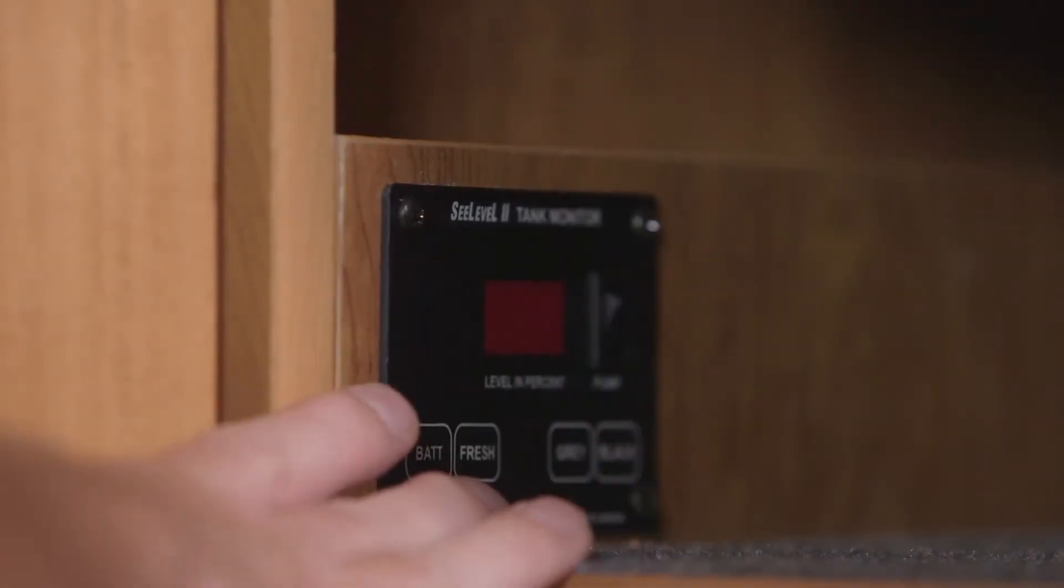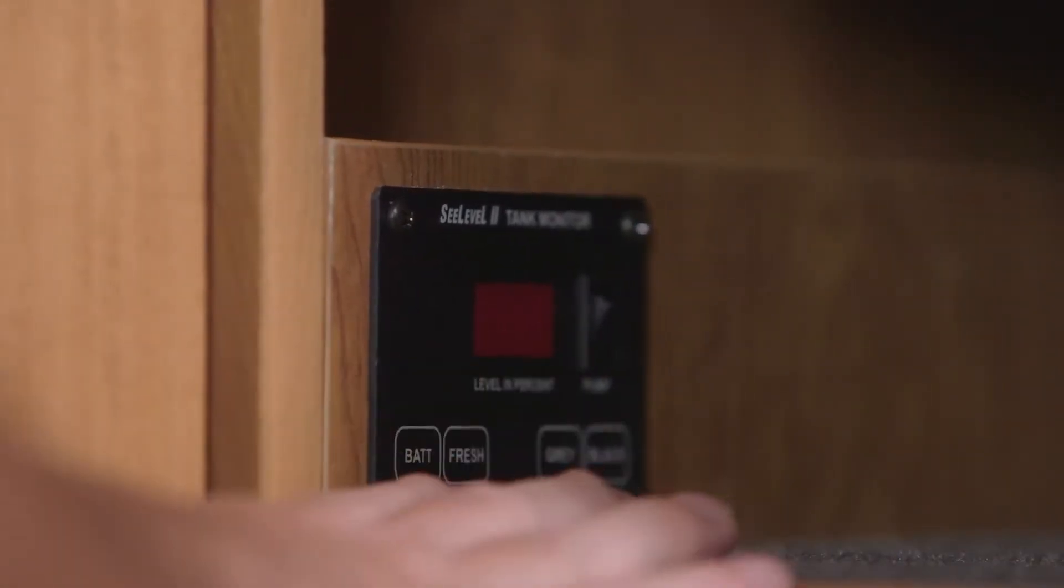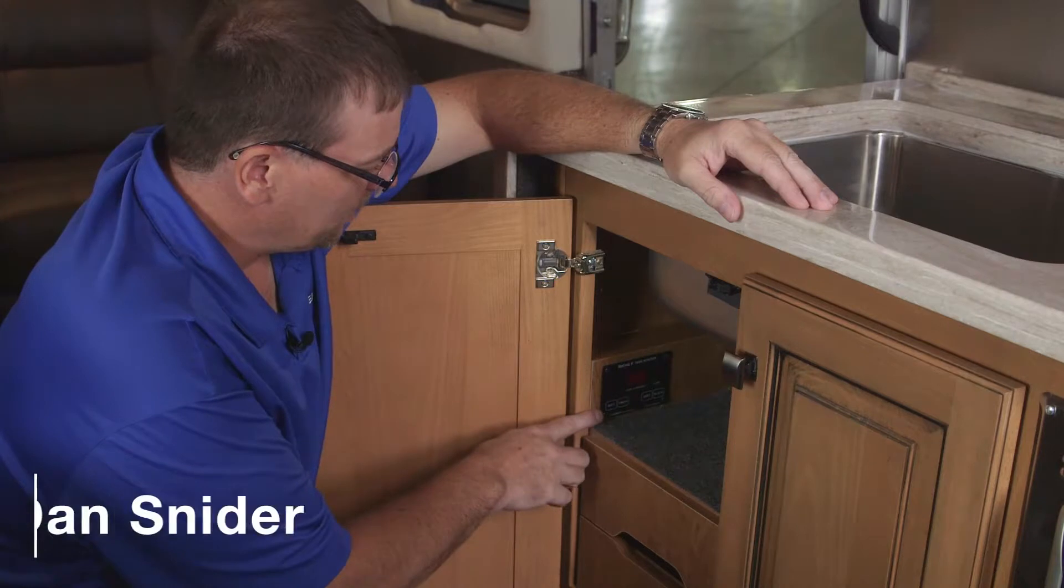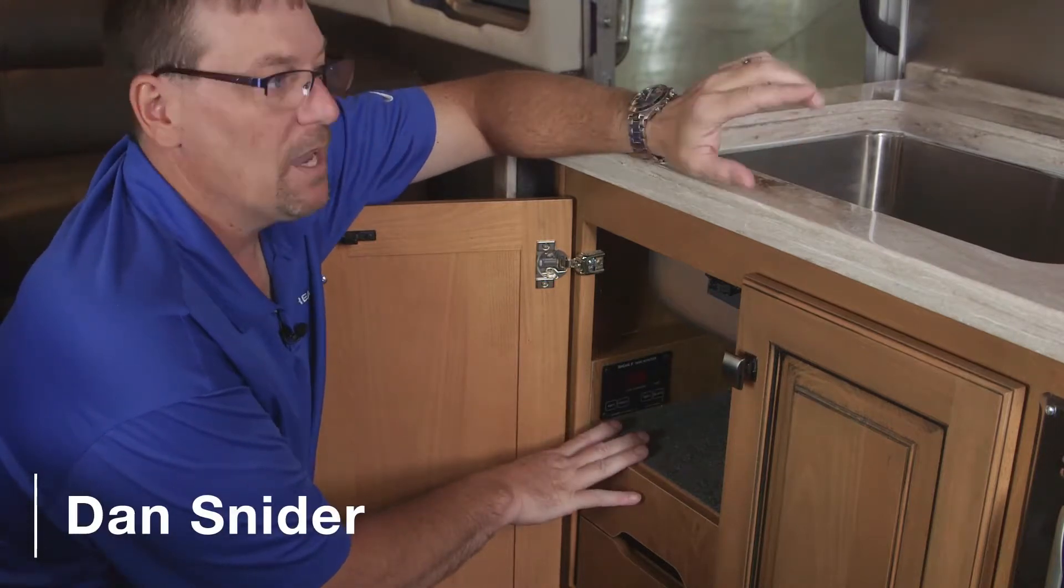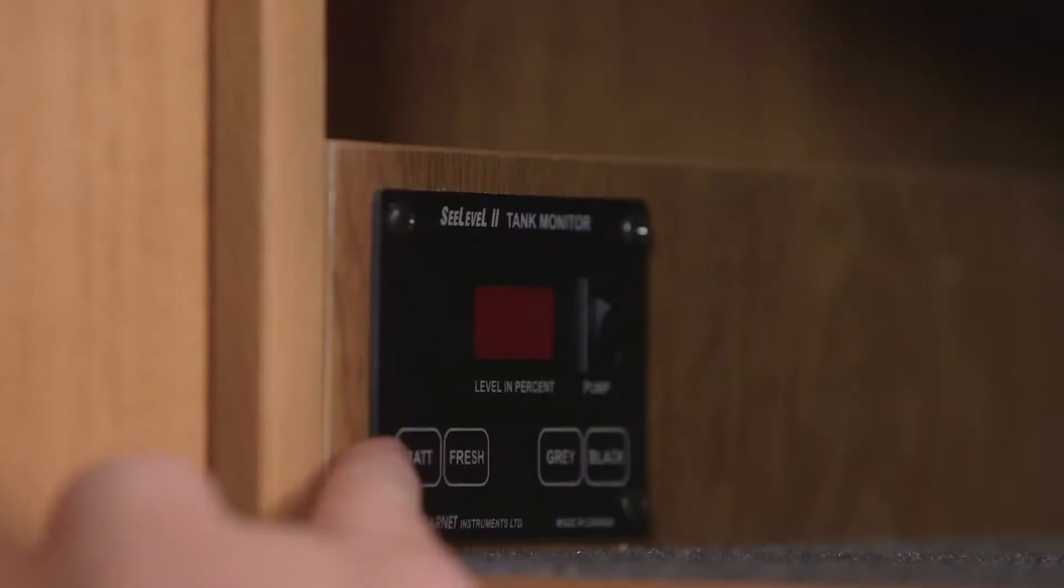The Airstream trailer is equipped with a sea level monitoring system. On the classic it's underneath the galley, on the other units it's above the galley on the wall. The first button here on the left is the battery button.